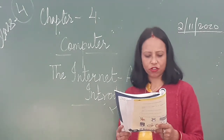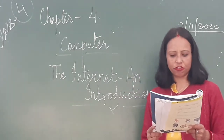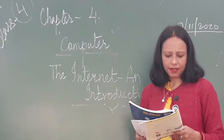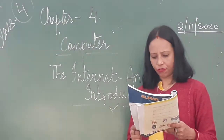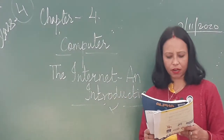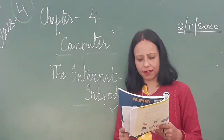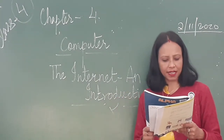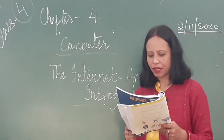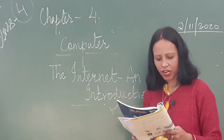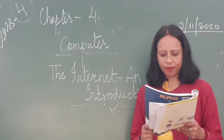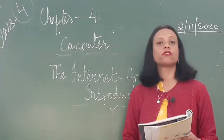Computers that are connected to each other through internet are capable to share information and communicate with each other. Internet is a network of networks which helps you to access and collect any information available on the internet. With the help of internet, one can communicate with people living in different parts of the world. It also enables people to sell and buy goods and services online.